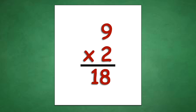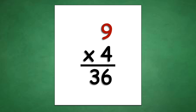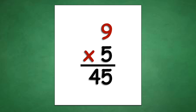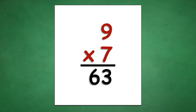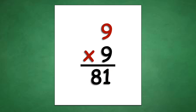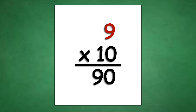Table of 9: 9 times 1 equals 9, 9 times 2 equals 18, 9 times 3 equals 27, 9 times 4 equals 36, 9 times 5 equals 45, 9 times 6 equals 54, 9 times 7 equals 63, 9 times 8 equals 72, 9 times 9 equals 81, 9 times 10 equals 90.